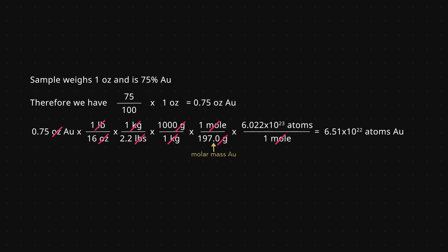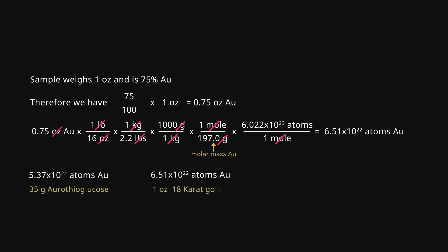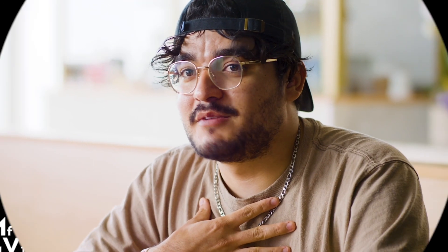We found that there are 5.37 times 10 to the 22nd atoms of gold in the aurothioglucose, and 6.51 times 10 to the 22nd atoms of gold in the 18 karat gold. Since 6.51 times 10 to the 22nd is larger than 5.37 times 10 to the 22nd, we can conclude that there are more atoms of gold in one ounce of 18 karat gold than in 35 grams of aurothioglucose. You probably don't have $1,500 to spend on gold, but now you know more about multi-step conversion.